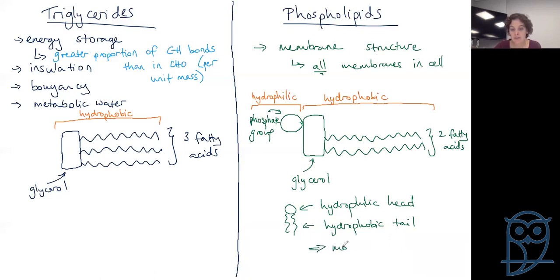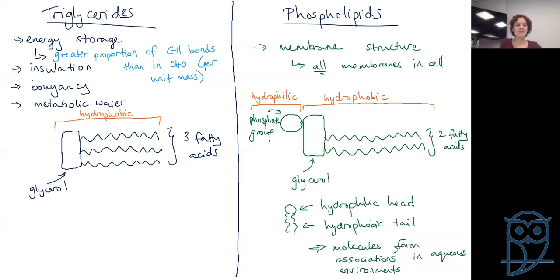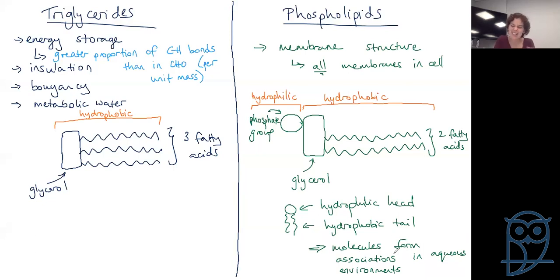These molecules form associations in aqueous environments. It all links back — glycerol has three OHs, so we can have three fatty acids to maximize energy storage, or two fatty acids and a phosphate group. Change that structure slightly and you change the function. Throughout your biology, focus on the structure and understand it in terms of function — when you tie things together, it's so much easier to remember and makes so much more sense.